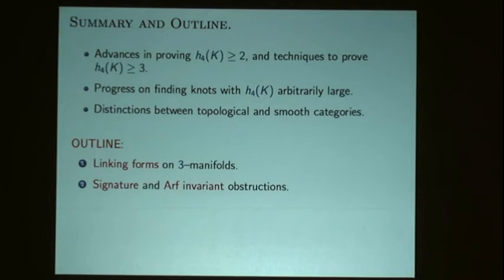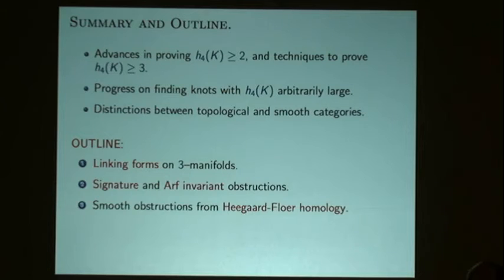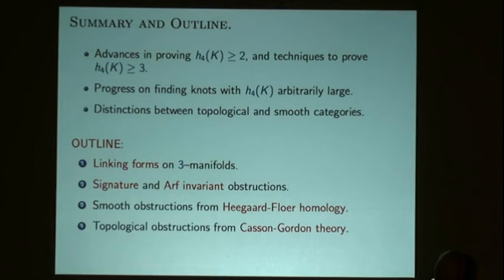The next technique is looking at signatures and Arf invariants of knots. After that, I'll look at some smooth invariants arising from Heegaard Floer homology and see how those can provide obstructions. I'm going to finish with Casson-Gordon theory that applies in the topological setting.